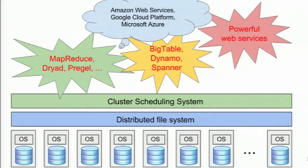Where are we? We have a pretty good handle on taking a collection of machines in a building and making them into a useful set of layered services: at the lowest level a distributed file system and cluster scheduling system, then higher-level programming models and structured storage systems, and a whole bunch of other services on top of those primitives — all publicly accessible.